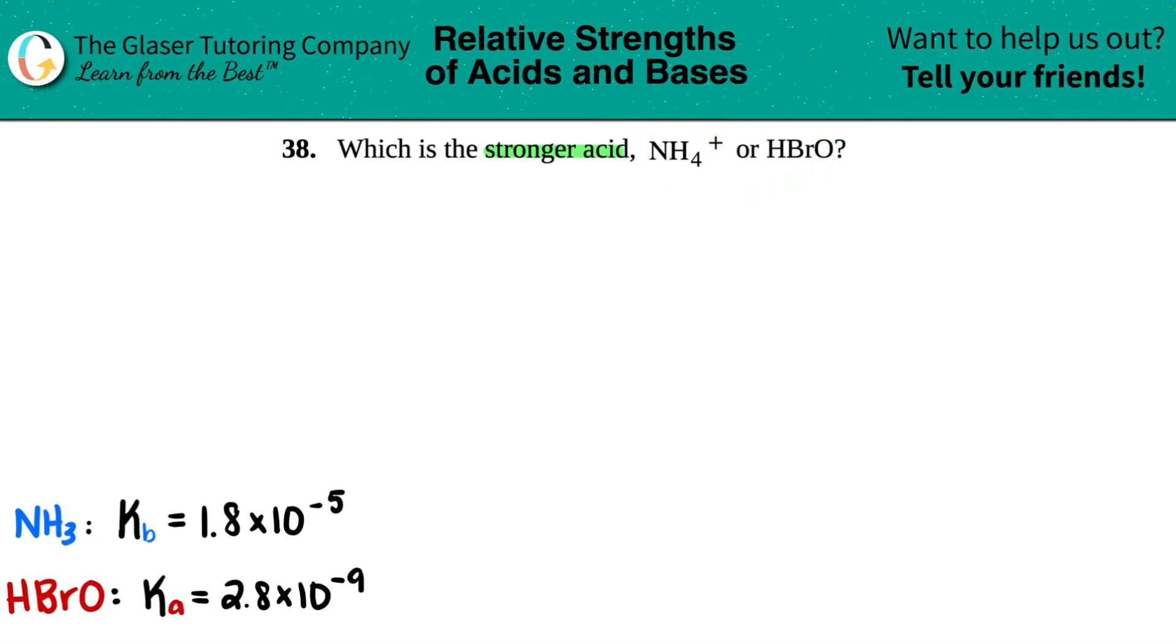I know that they're both weak because they're not on the six strong acid list, but the only thing that we can do here is we can actually pull up the Ka and the Kb values. Now if you go in the back of your textbook, chances are you will see a list of Ka and Kb values.